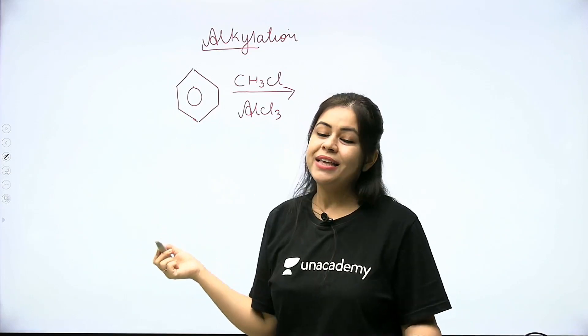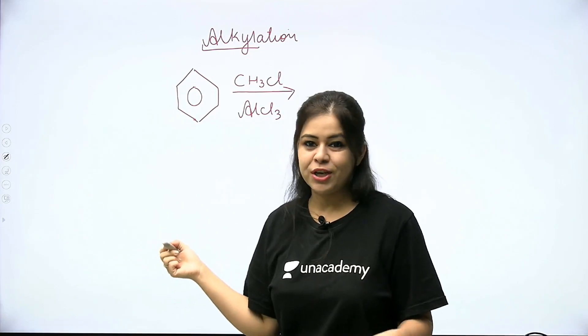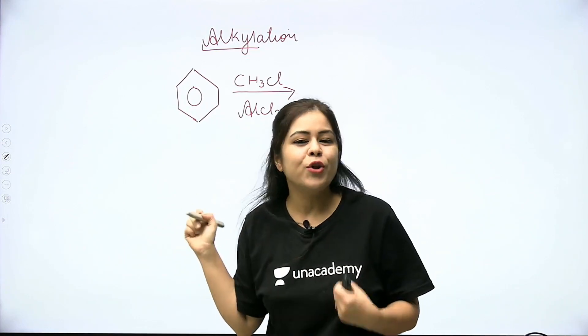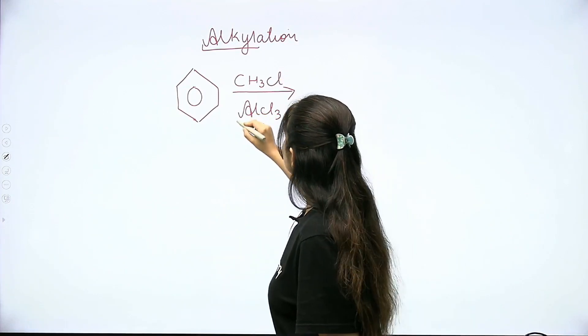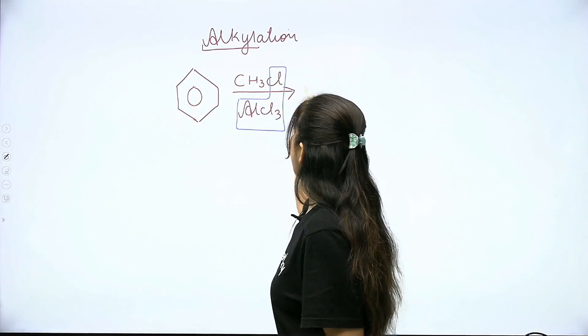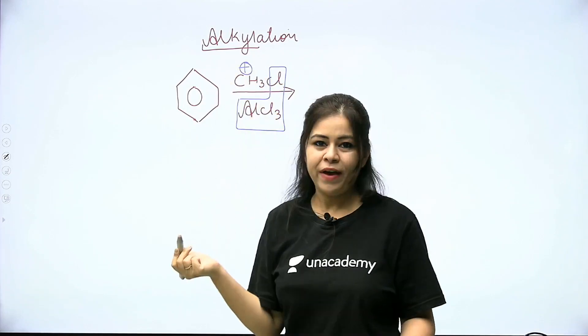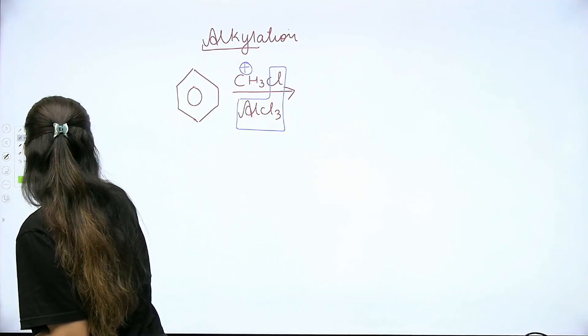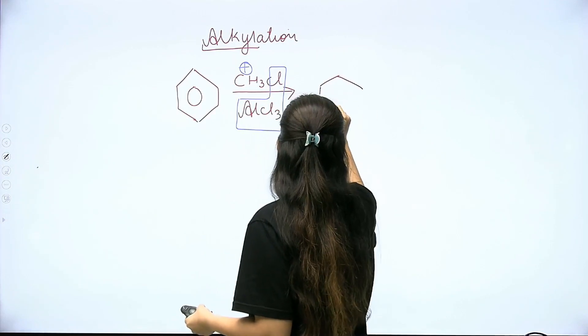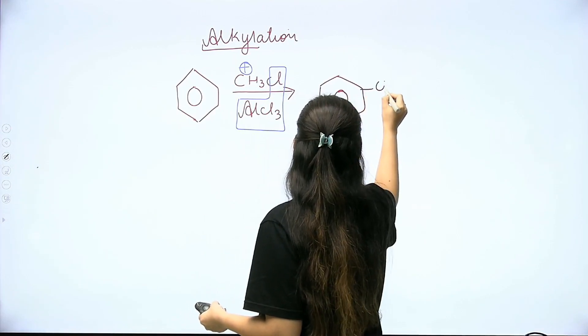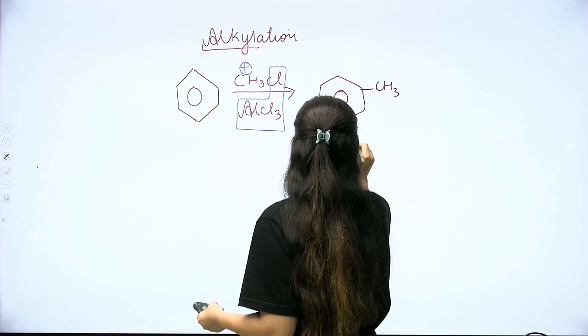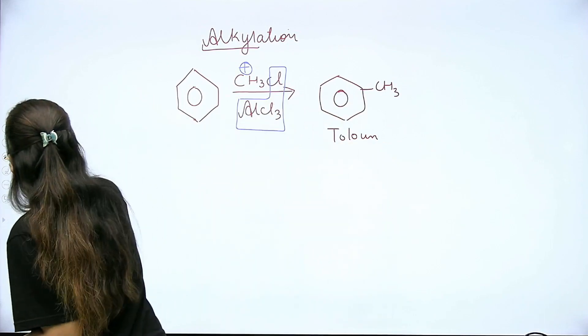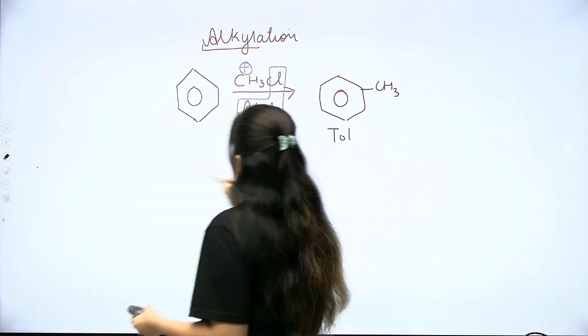Very simple thing. I often say in my common language that this Lewis acid catalyst is called chlorine-chor, which means halogen-chor. Why do we say that? I will explain. This AlCl3 chlorine-chor will help. We have added CH3 plus as electrophile, so benzene ring we will attach this electrophile. We have made benzene again and attached the CH3 group, which we have made toluene. This is known as Friedel-Crafts alkylation.